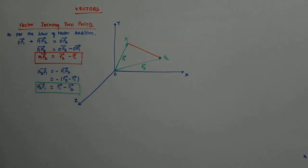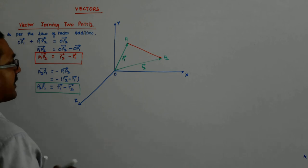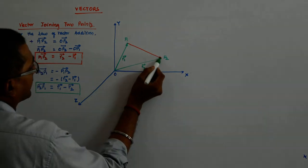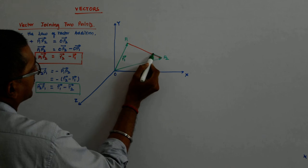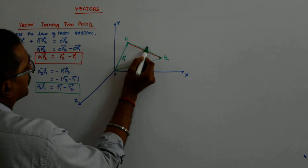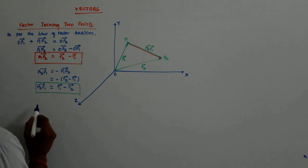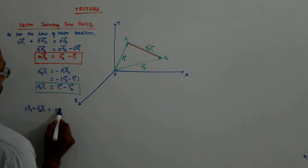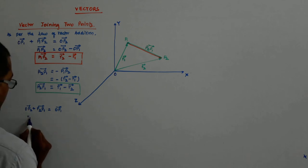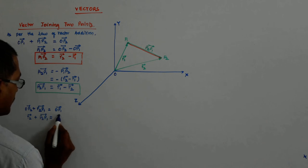Or you can do that. You can draw that vector. So maybe this is my, the green one is my P2P1 vector. So what happens? OP2 plus P2P1 is equal to OP1 and OP2 is R2 plus P2P1 is equal to R1.